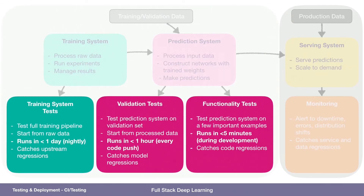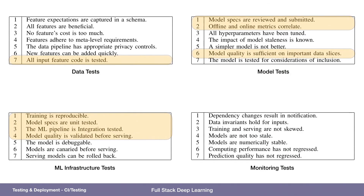So what I'm going to talk about in this continuous integration part is the training system test, the validation test, and the functionality test. I think where it maps onto the ML test scores is roughly here.